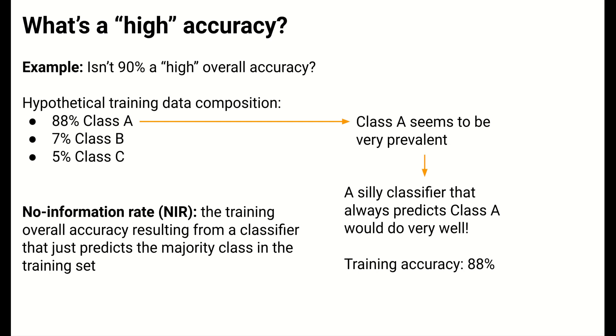This metric can also be calculated in the test set as well, but the no information rate is useful for calibrating our perception of method performance.